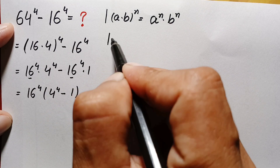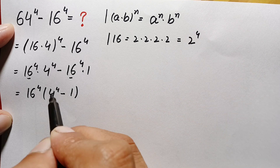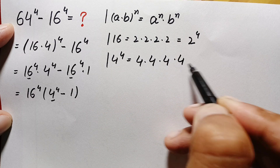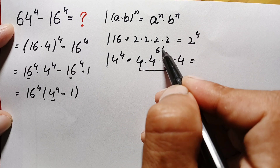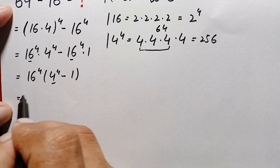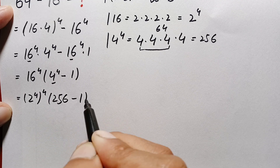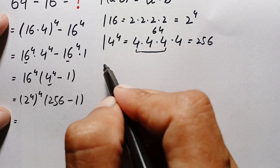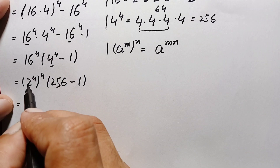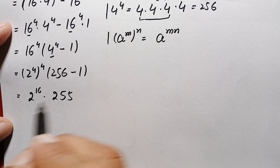Next, we can write 16 as 2 times 2 is 4, 4 times 2 is 8, 8 times 2 is 16 — so 16 is 2 raised to power 4. And 4 raised to power 4 is 4 × 4 = 16, 16 × 4 = 64, 64 × 4 = 256. So the expression becomes (2 raised to power 4) raised to power 4, times 255. Then using the identity (aᵐ)ⁿ = aᵐⁿ, this becomes 2 raised to power 16, times 255.